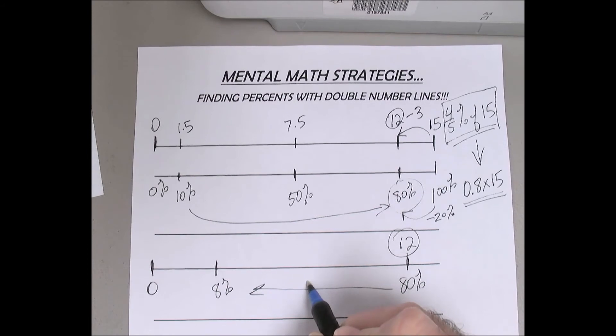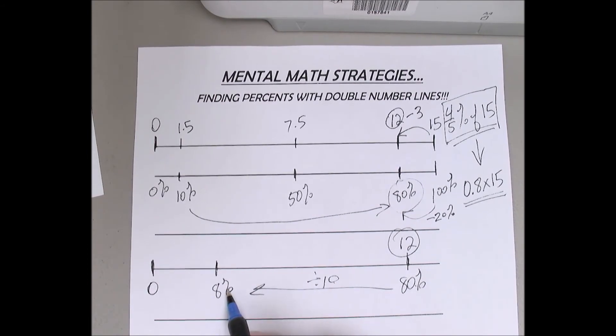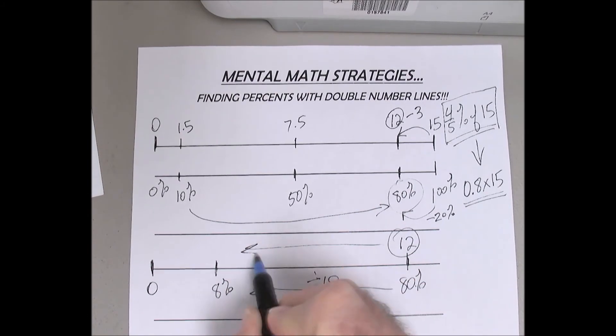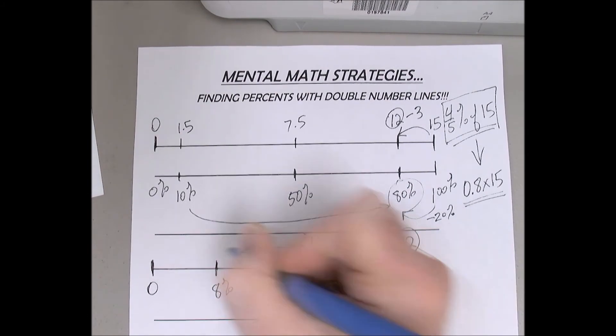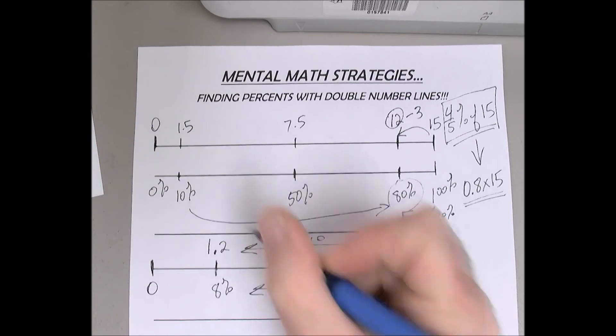Because if I take 80, divide it by 10, that's 8 percent. So this will be the same proportion. 8 percent is 1.2.